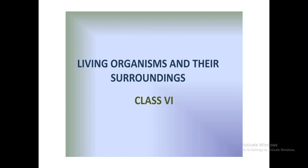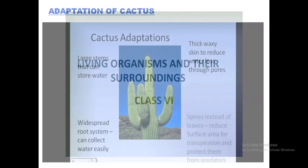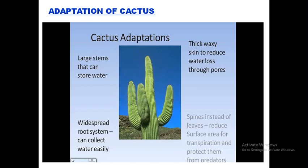Hello students, we are continuing with the chapter 'Living Organisms and Their Surroundings.' We had already discussed the different terrestrial habitats, including the general features of the desert and the general characters of desert plants and animals. Today we will deal with specific characters of two desert organisms: the desert plant cactus and the desert animal camel. First, we are looking at the adaptation of the cactus.